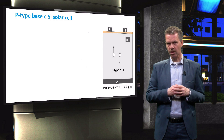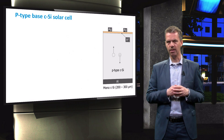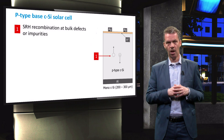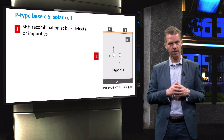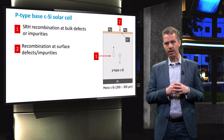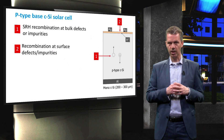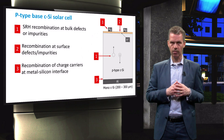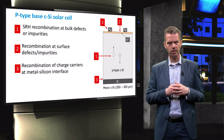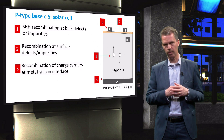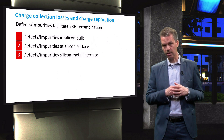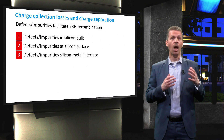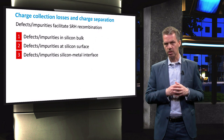When we take a closer look at the P-type base of a crystalline silicon solar cell, we can identify recombination mechanisms at three different locations. First, Shockley-Reed Hall recombination via defect states and impurities in the bulk of the material. Second, surface recombination by impurities or defects at the front surface. Third, at the interface between metal and semiconductor, where the recombination rate is very high. We can then think of approaches to reduce these recombination rates.